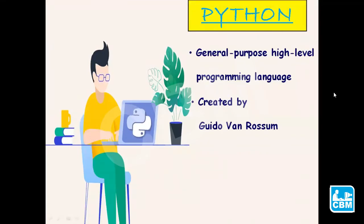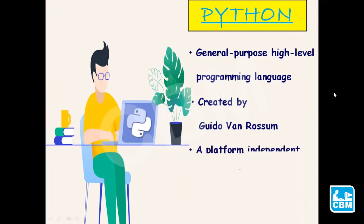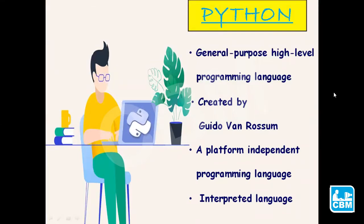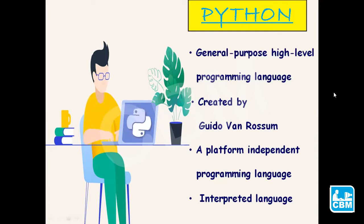Python is a general-purpose high-level programming language. It can be used on any platform and it is an interpreted language. Python has many applications — it can be used to develop games and robots, develop AI applications, perform scientific computations and many other different applications.